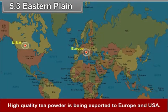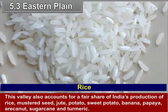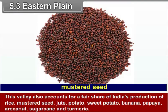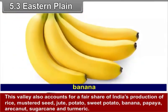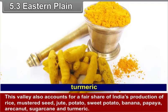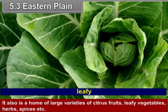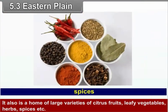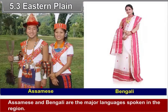Assam Valley's biggest contribution to the world is tea; it produces some of the finest and most expensive varieties. High quality tea is being exported to Europe and the USA. This valley also accounts for a fair share of Indian production of rice, mustard seed, jute, potato, sweet potato, banana, papaya, areca nut, sugarcane and turmeric. It is also home to a large variety of citrus fruits, leafy vegetables, herbs, spices, etc. 45 languages are spoken by different communities. Assamese and Bengali are the major languages spoken in the region.